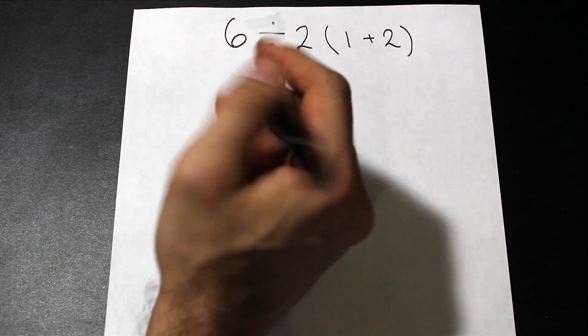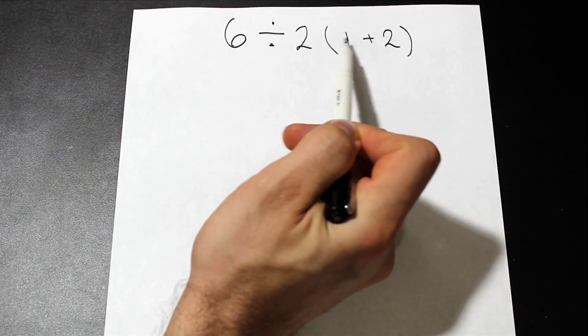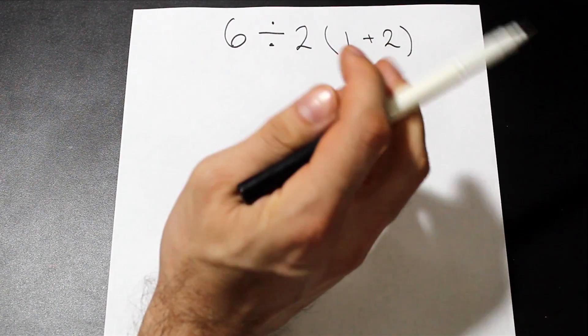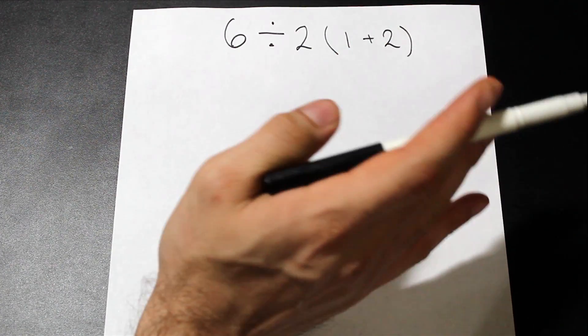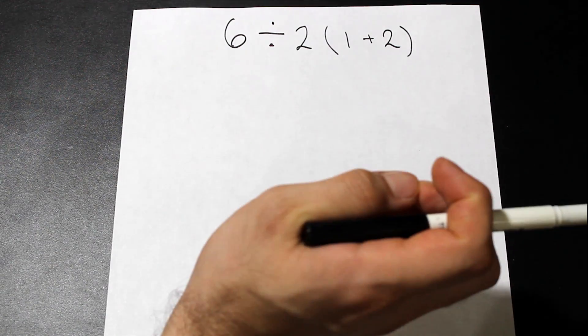Let's take a look at the question. We have six divided by two times one plus two, and the reason why people are making mistakes on this is it's a notation issue.